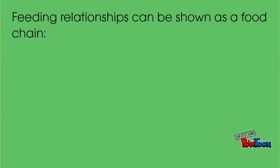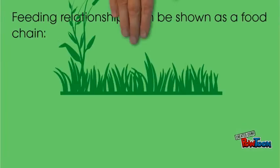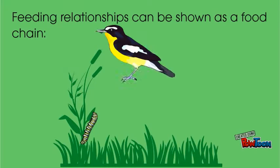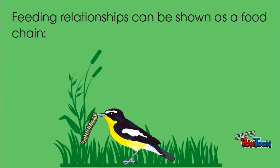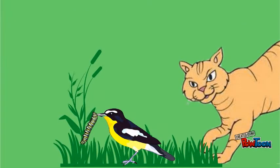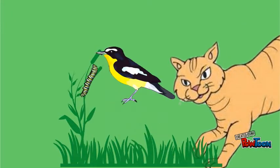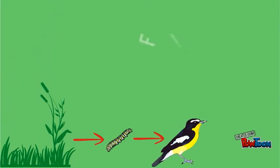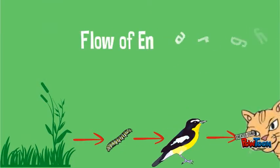Here is a simple feeding relationship. The grass is eaten by the caterpillar. A bird then comes and eats the caterpillar, and the party is ruined by the cat. A straightforward food chain is used to show this, with the arrows representing energy flow.